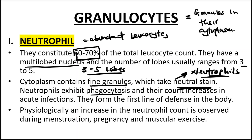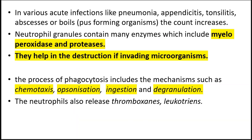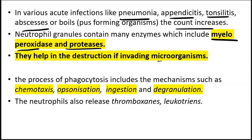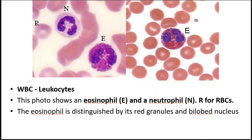Neutrophils exhibit phagocytosis — meaning they engulf bacteria and kill it — and their count increases in acute infections. They form the first line of defense in the body. Physiologically, an increase in neutrophil count is observed during menstruation, pregnancy, and muscular exercise. In acute conditions such as pneumonia, appendicitis, tonsillitis, and abscess, the neutrophil count increases. Neutrophil granules contain enzymes including myeloperoxidase and proteases, which help in the destruction of microorganisms.